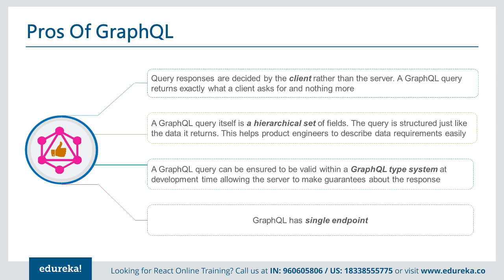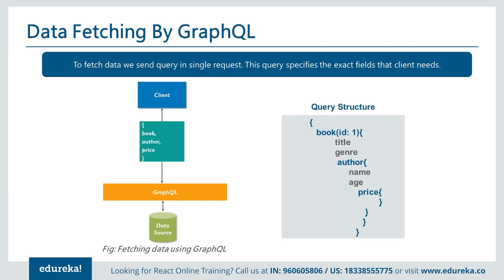What are the pros of GraphQL? Query responses are dictated by the client rather than the server. A GraphQL query returns exactly what the client asks for, nothing more. A GraphQL query itself is a hierarchical set of fields — the query structure mirrors the data it returns. It helps engineers describe data requirements easily. GraphQL can be validated within a type system at development time. GraphQL always has one single endpoint, and data is retrieved based on the query sent in a single request specifying the exact fields the client needs.